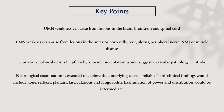I hope this has covered a basic approach to weakness. Here are some key points: upper motor neuron weakness can arise from lesions in the brain, brainstem, and spinal cord. Lower motor neuron weakness can arise from lesions in your anterior horn cells, root, plexus, peripheral nerve, neuromuscular junction, or it could be a muscle disease.